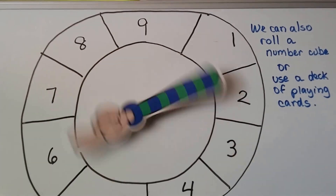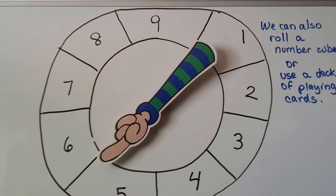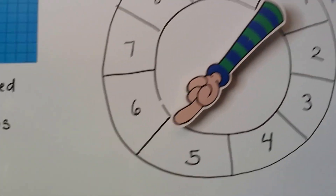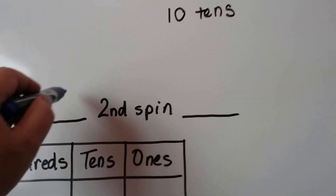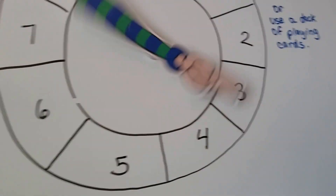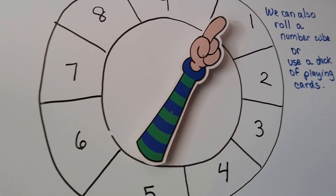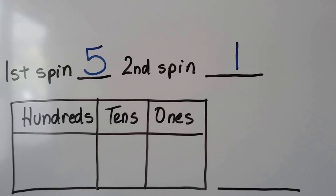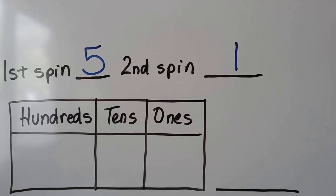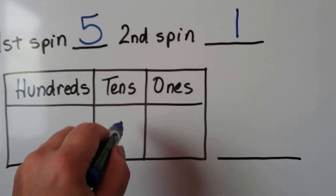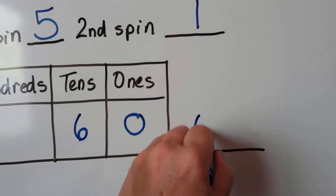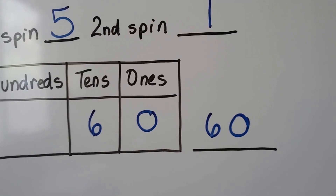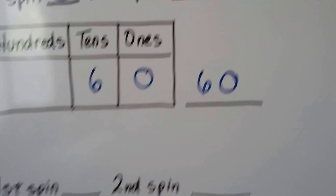We have five tens for the first spin. We spin again and get one ten for the second spin. We can add five tens and one ten — that would be six tens and zero ones, so we have sixty.